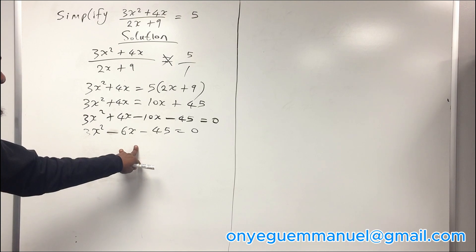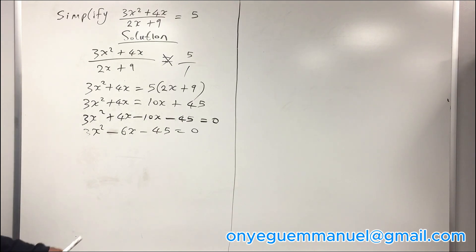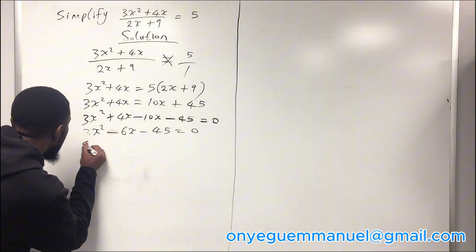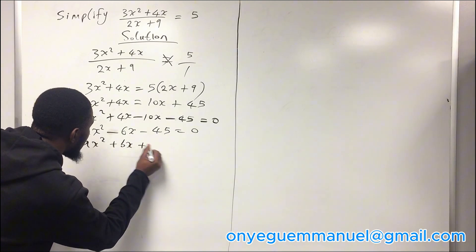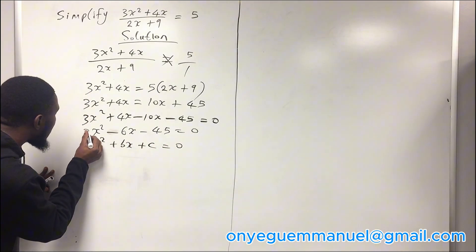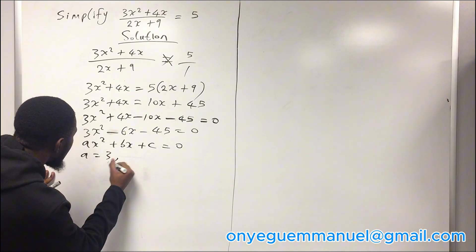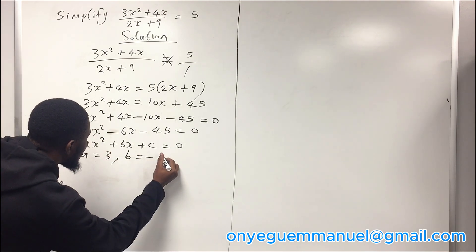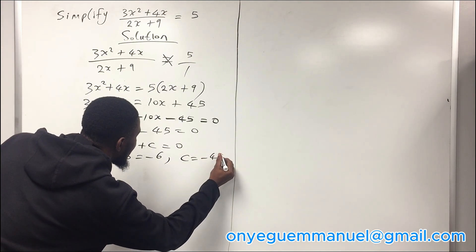From this now you solve using quadratic method. This is in form of quadratic equation because the general form is ax squared plus bx plus c equals 0. So from here, a is 3, b is minus 6, and c is minus 45.